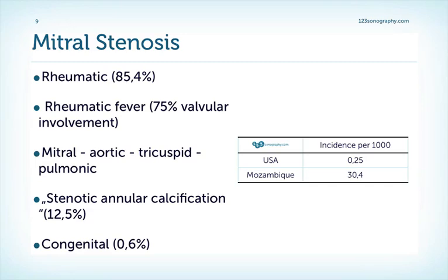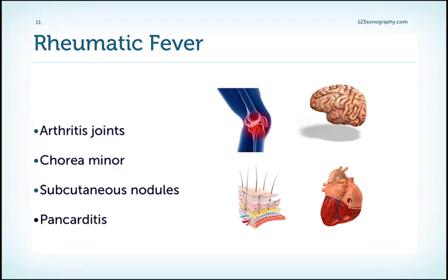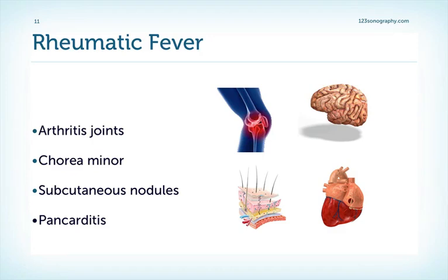There are also rare congenital forms such as the parachute mitral valve or the double orifice mitral valve. Rheumatic fever is caused by group A streptococcal bacteria and it usually causes tonsillopharyngitis. Rheumatic fever not only involves the heart but also the joints, where it causes arthritis; the brain, where it leads to chorea minor; it forms subcutaneous nodules; and finally it can involve all three layers of the heart — the endocardium, the pericardium, and the myocardium. It's an antigenic reaction to group A streptococcal pyrogens, leading to a cascade of inflammatory processes which eventually form so-called Aschoff bodies, resulting in tissue destruction and necrosis.